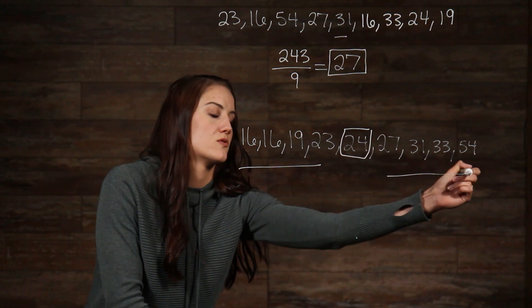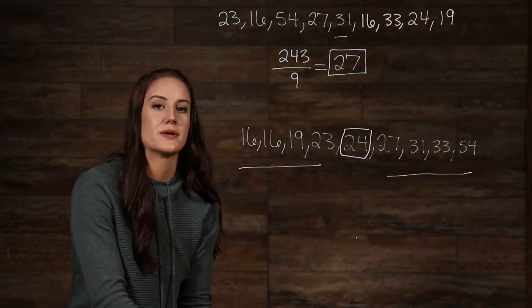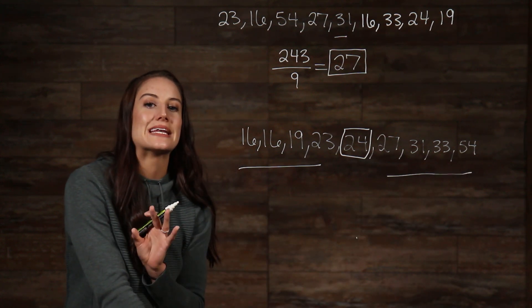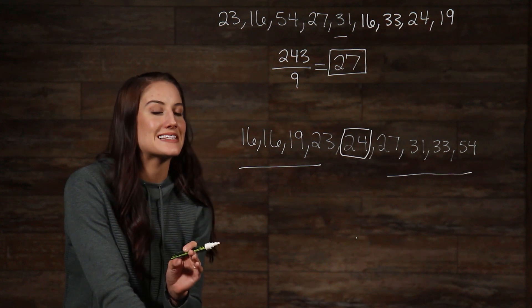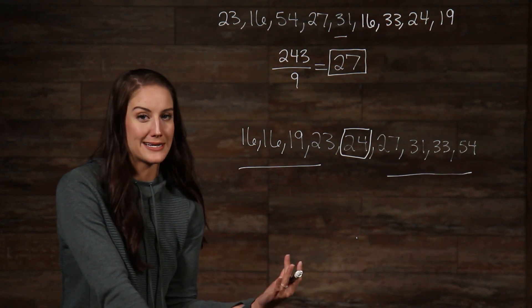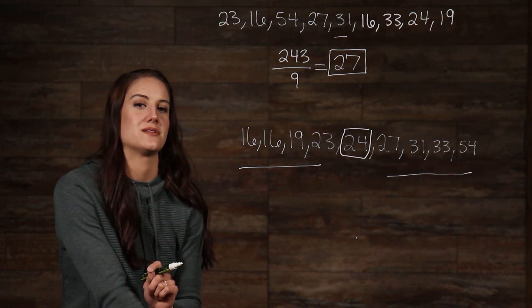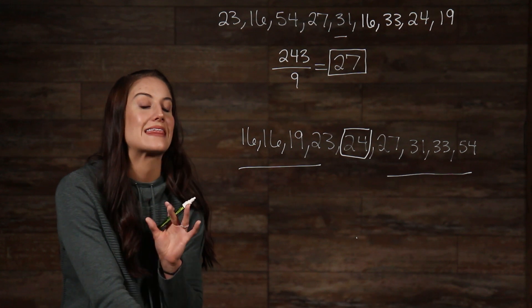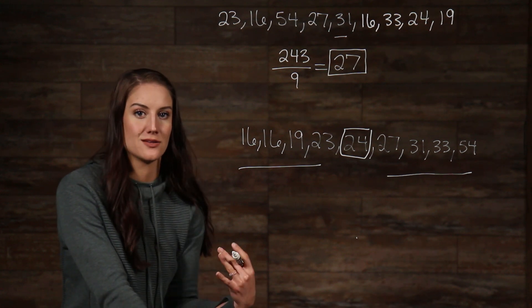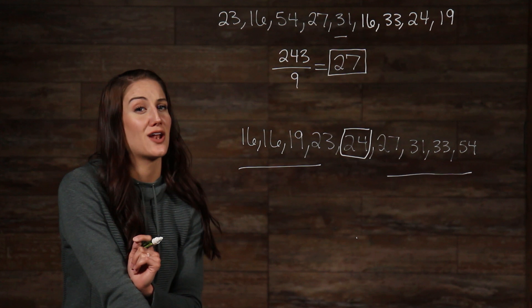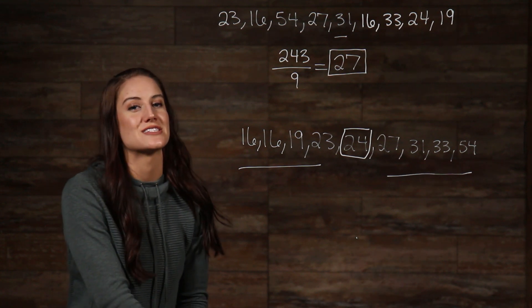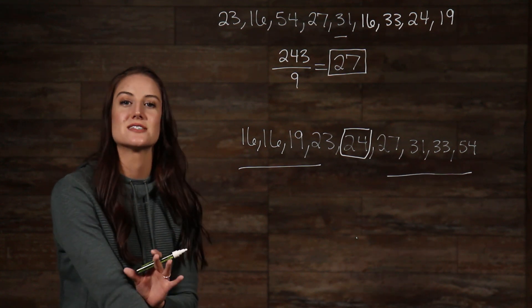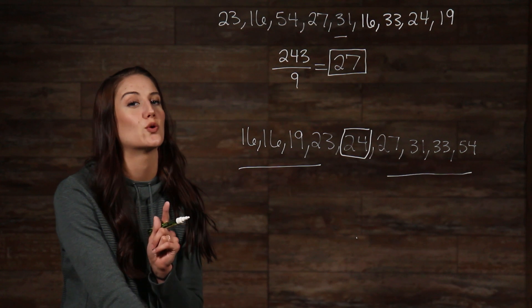So, we have four numbers here and four numbers here, putting our 24 in the middle. Now, we can easily see the middle number in this list because we only have nine numbers. But what happens when we have a list of 1000 numbers? I mean, you can use the same method, but it may take you a little longer. So, mathematicians have graciously worked to give us a formula to make this process quicker.